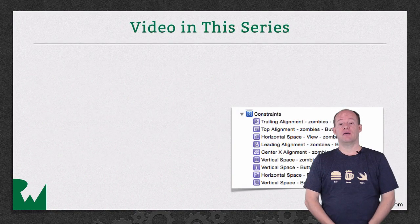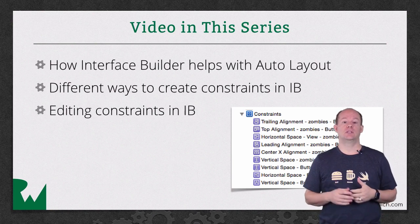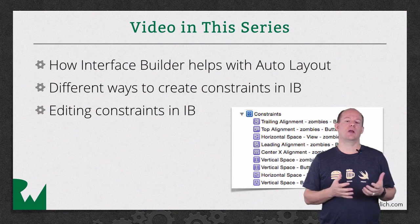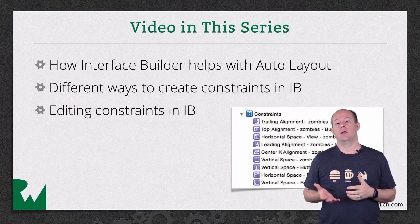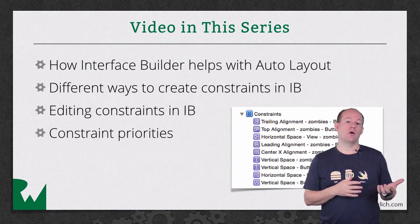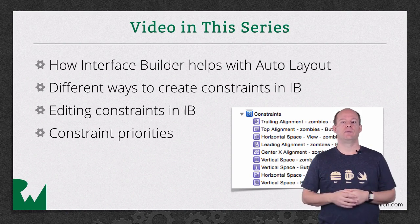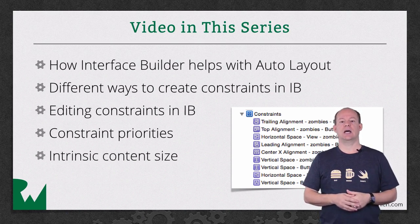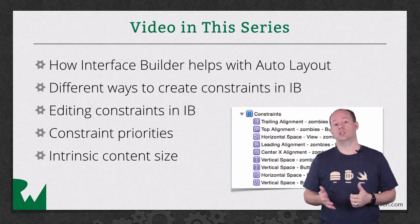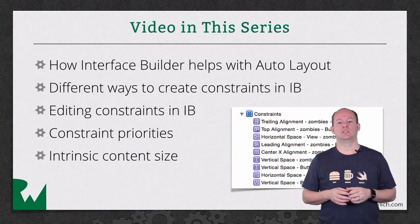We've got a lot to cover in this series. In the first three videos, you'll learn the basics of creating constraints using Interface Builder. Then you'll learn the key concepts of constraint priorities and intrinsic content size. Priorities provide a way to define which constraints should take precedence over others, and are a mechanism for adding power to your Auto Layout toolbox. Intrinsic content size provides a way for the Auto Layout framework to infer the size of views when their content should define how big they are — like, I want this image view to be as big as the image it's displaying.